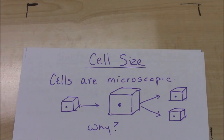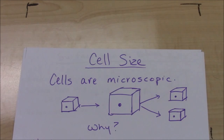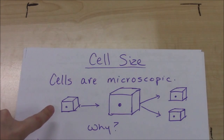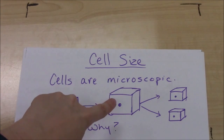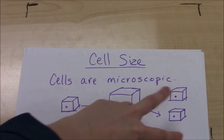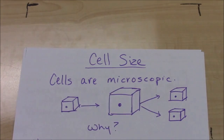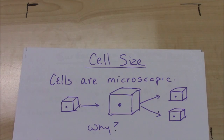In organisms, no matter how small or large, all of the cells that make them up are very small — they're microscopic, you can't see them with the naked eye. They begin small, they grow, and then when they get to a large size they're going to divide. But why can't a large organism like us or an elephant just have bigger cells?